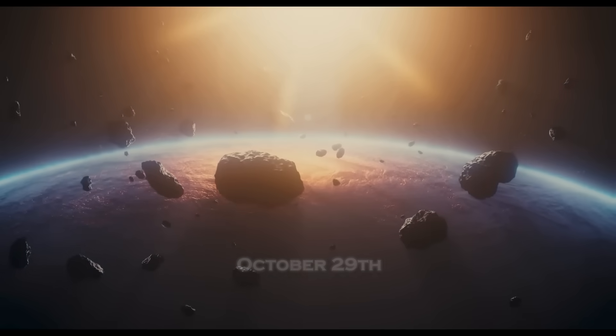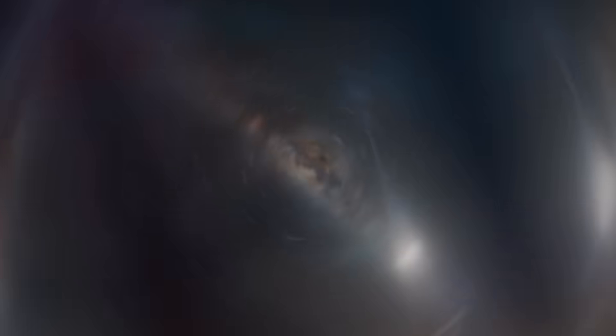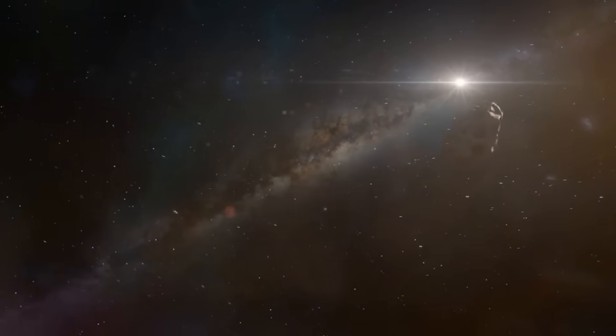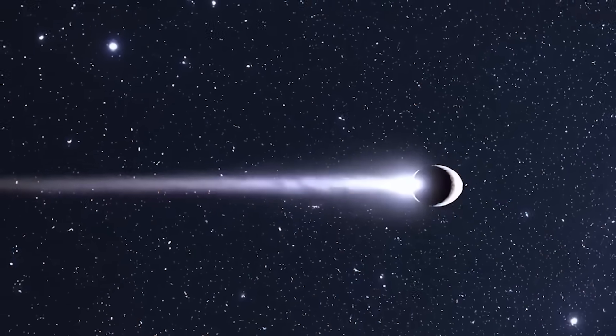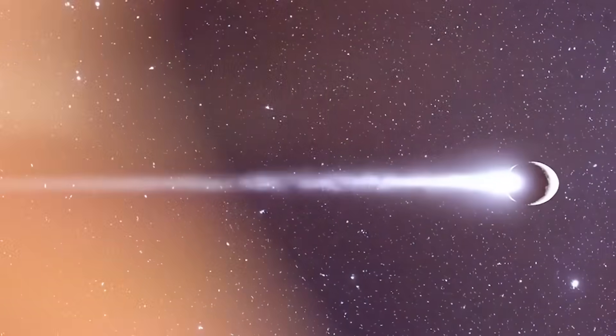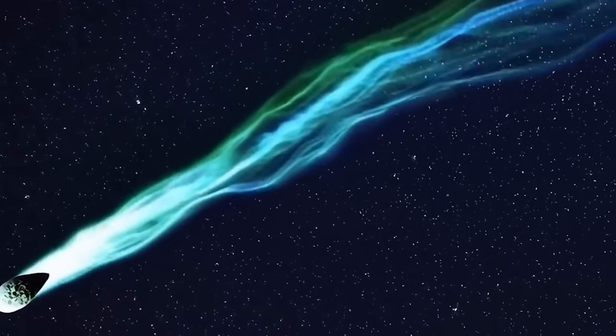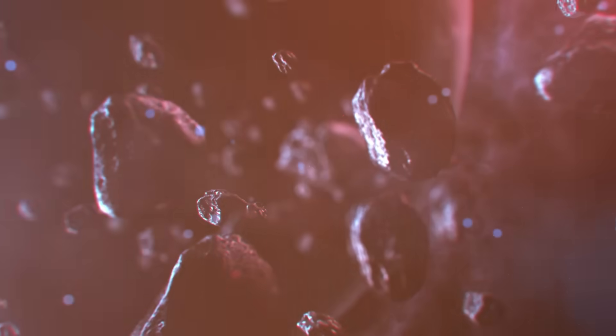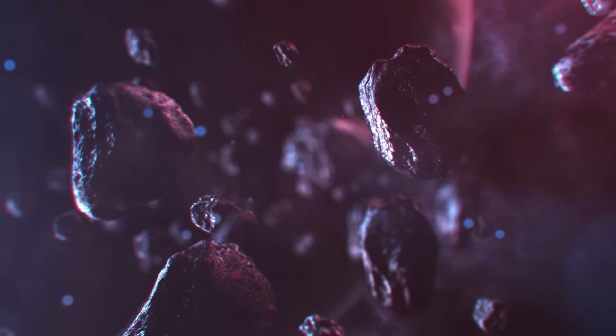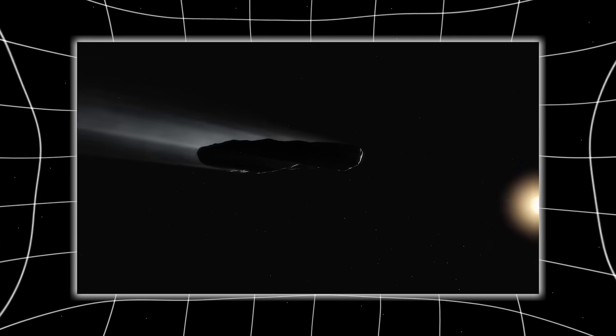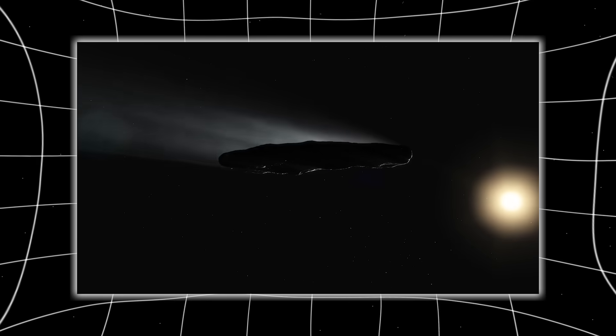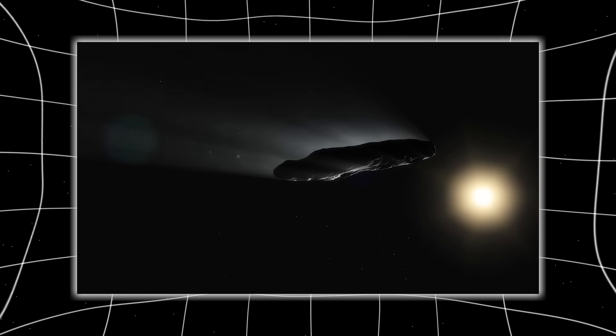3i Atlas passed closest to the sun on October 29th, a moment when most comets experience violent stress. This is when sublimation becomes intense, when gases burst outward, when the nucleus heats unevenly and fractures under pressure. Many comets simply don't make it through perihelion intact.